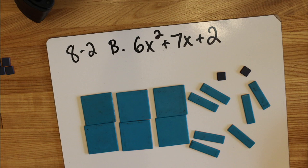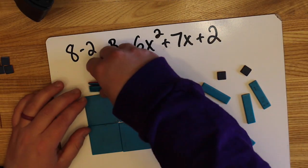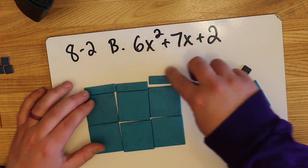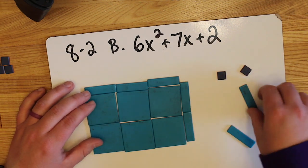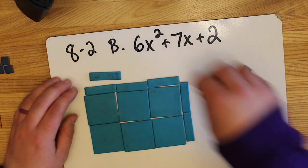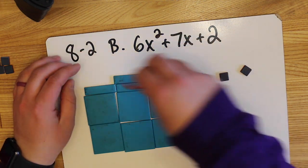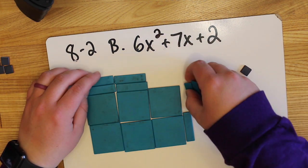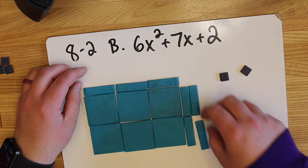For the next problem, we need 6x squared plus 7x plus 2. So now you're going to try to put these tiles into a rectangle. And then you're going to write the outside perimeter, which is the product.